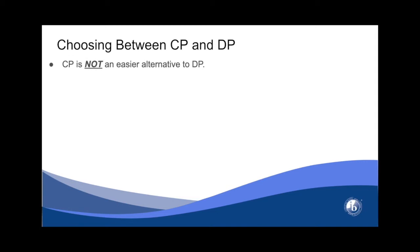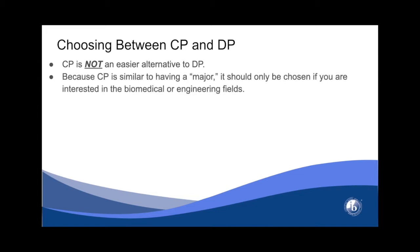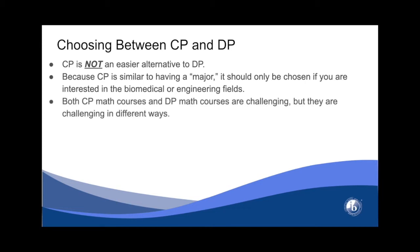Please note that CP is not an easier alternative to DP. For example, DP does Sports Exercise Health Science in two years, whereas CP does that course in one semester. So it is definitely not easier — it's just different. CP is very similar to having a major, so you should really only choose it if you want to go into the Biomedical or Engineering fields. Both CP math courses and DP math courses are challenging, but in different ways.